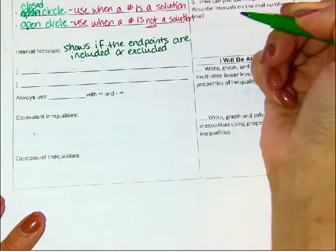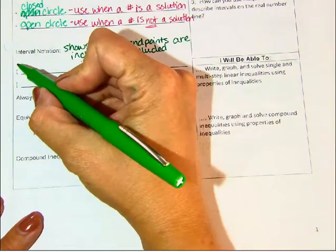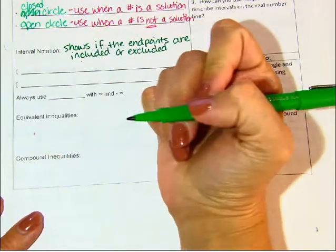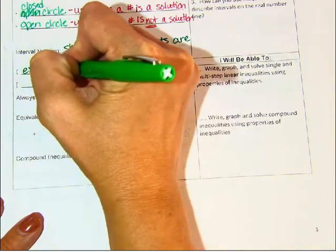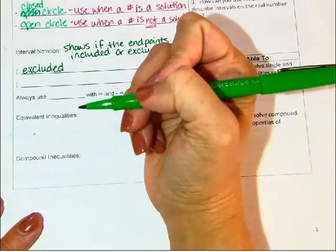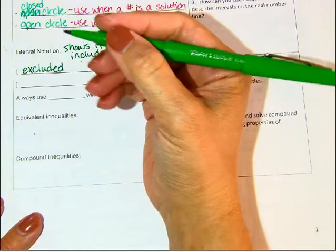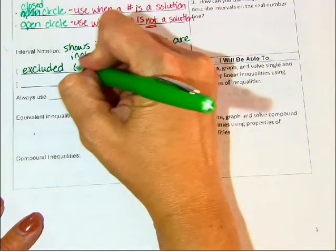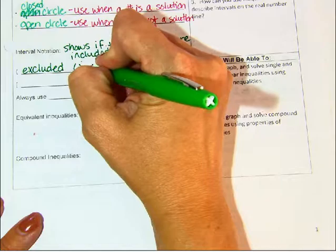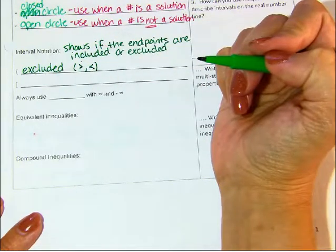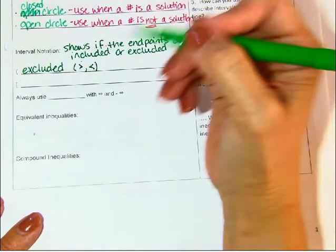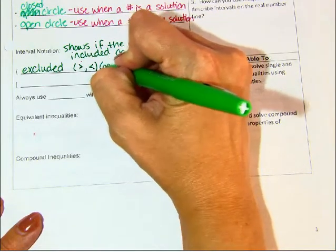So I'm just going to write shows if the endpoints are included or excluded. We'll show that it's excluded if it's a parenthesis. And we'll use that on the endpoint if it has a less than or greater than symbol. Because that's where we leave the open circle. So you might want to list that.